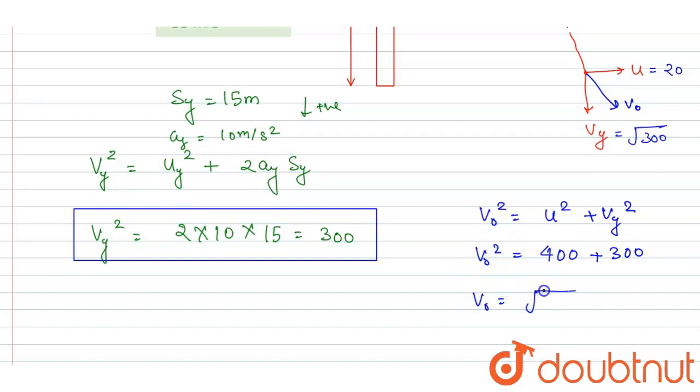So it is 400 plus 300 equals v naught squared. Now if you take under root both sides, it is under root of 700, and this is the answer of this question.